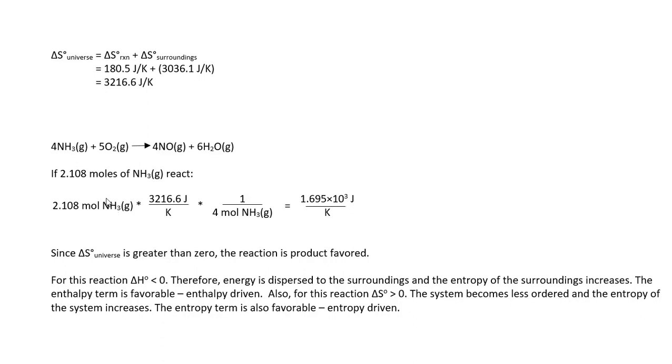Now, if we calculate the ΔS_universe for the particular amount of 2.108 moles of ammonia that react, we use that value 2.108 and the stoichiometry for moles of ammonium for every 3216.6 joules per kelvin, and we end up with a value of 1.695 times 10³ joules per kelvin for this particular amount of moles of ammonium.